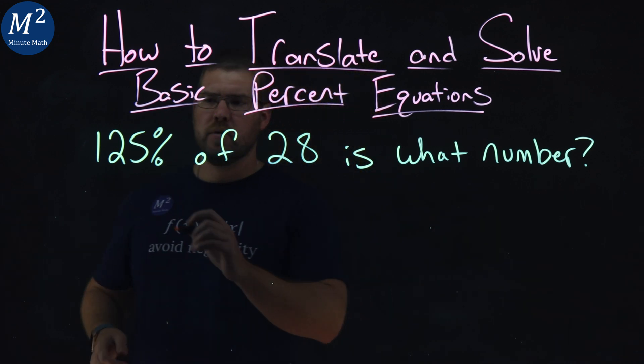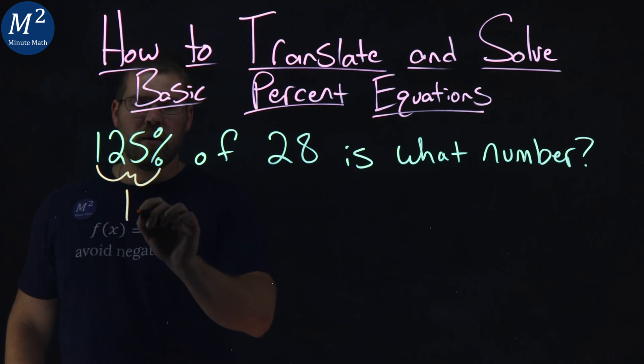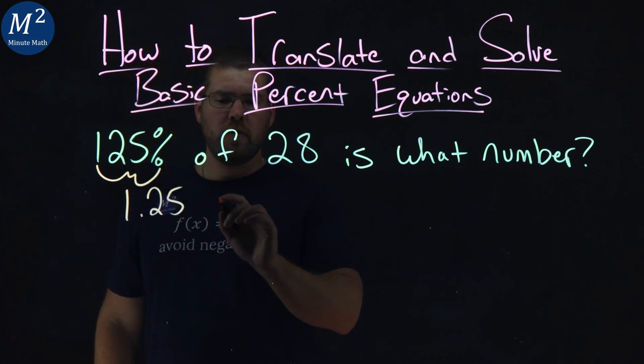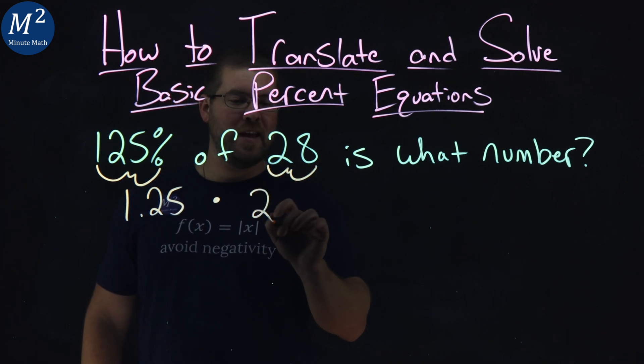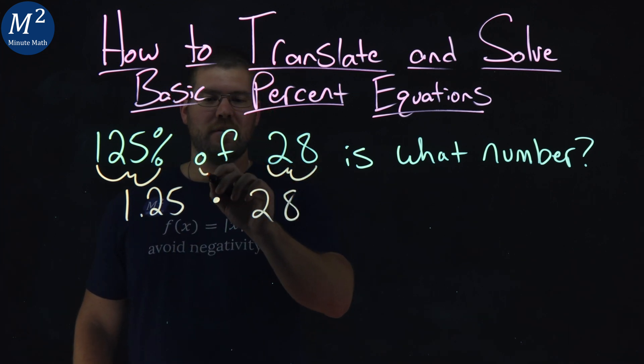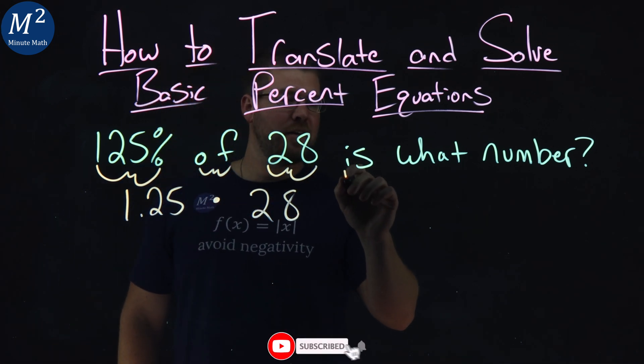125% as a decimal is 1.25. Of—multiplication going on here—28, well we'll put a 28 just down here, times. Breaking it down: so of, multiplication, 28, 28 is...